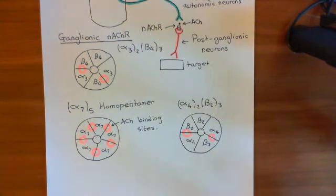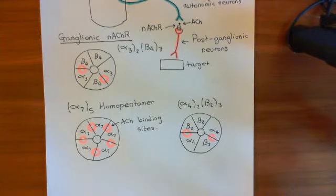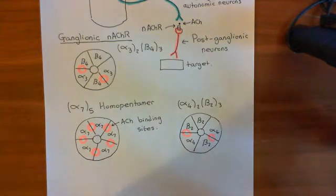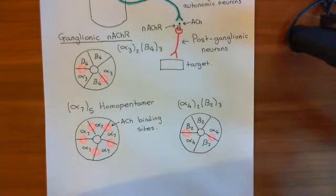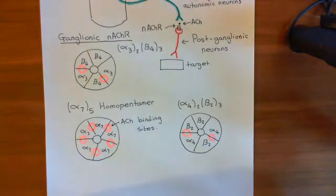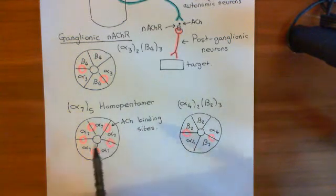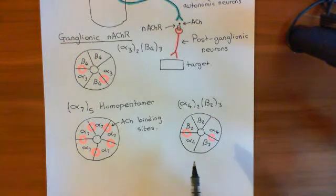Both of these forms are expressed within the brain — they are the main two forms of nicotinic acetylcholine receptor found in the brain. Acetylcholine is an agonist for absolutely all of the forms of the receptor we've discussed: the skeletal muscle forms (both adult and fetal forms), the ganglionic nicotinic acetylcholine receptor, and both of the CNS forms. However, nicotine is only an agonist on the ganglionic nicotinic acetylcholine receptors, the alpha-7, 5 homopentamers in the brain, and the alpha-4, 2, beta-2, 3 heteropentamer within the brain.